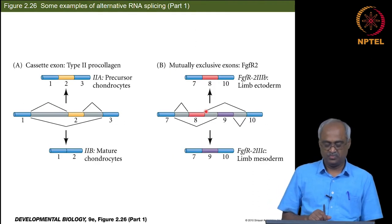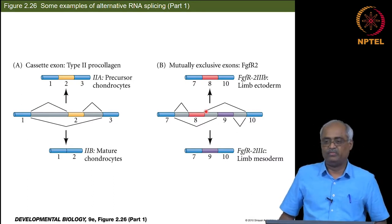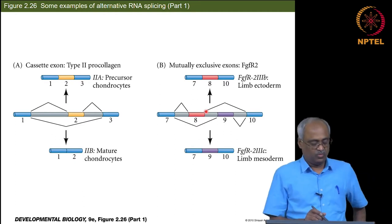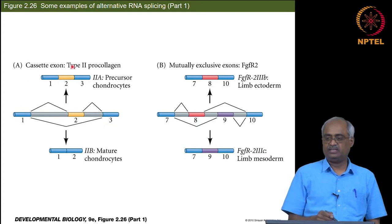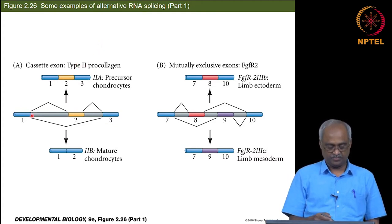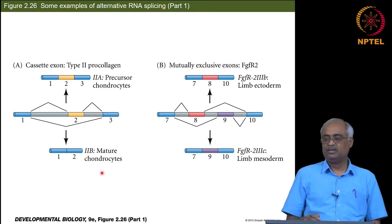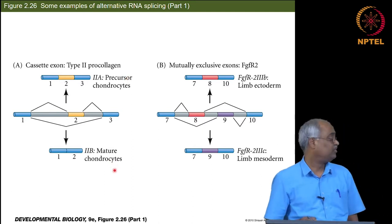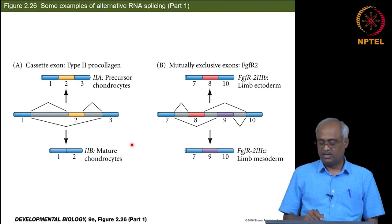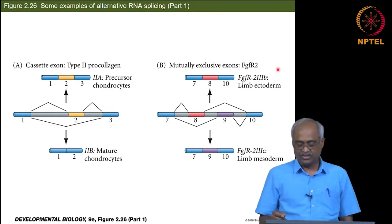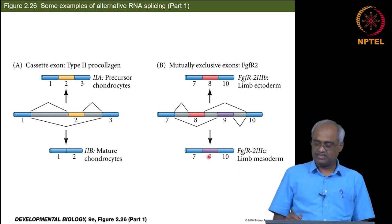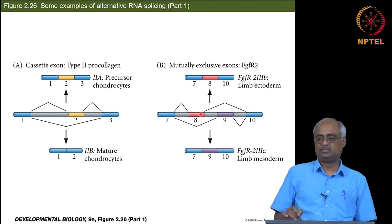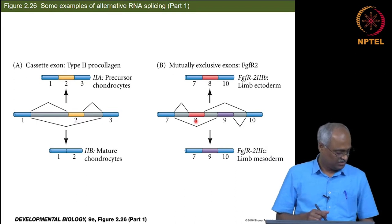Splicing can occur in four different ways. One example is cassette exon splicing, seen in type 2 pro-collagen, where exons 1, 2, 3 appear as one cassette in precursor chondrocytes and exons 1, 2 in mature chondrocytes. Another type is mutually exclusive splicing, where in one tissue type one exon is present and the other is excluded, and vice versa — if red is present, purple is excluded and they are mutually exclusive.